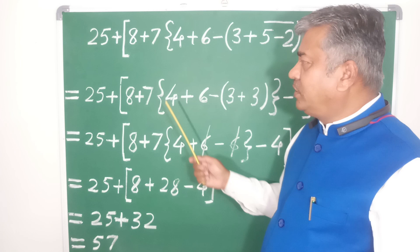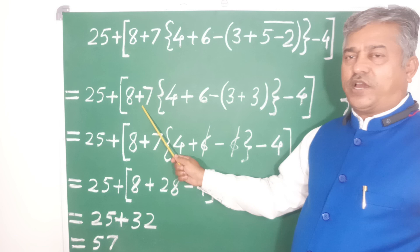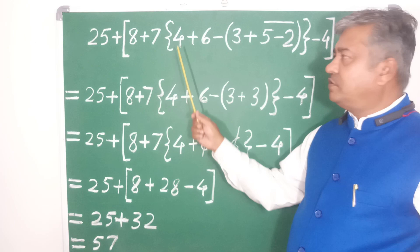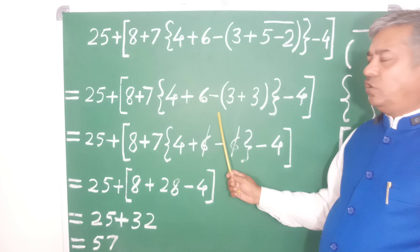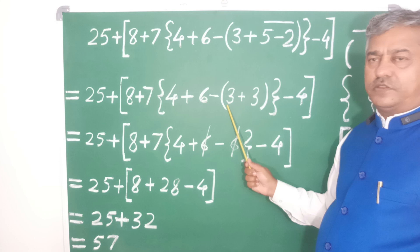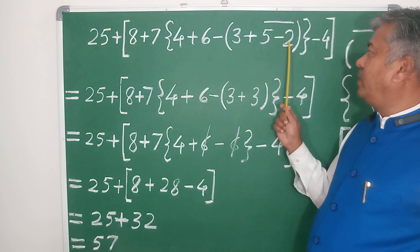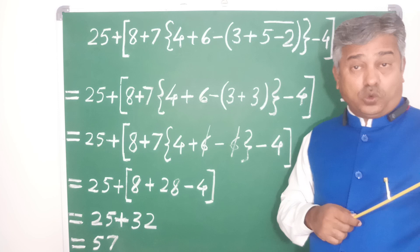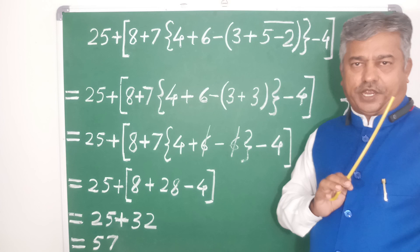Write down all the things as they are. This equals 25 plus square bracket, 8 plus 7 — wait, that should be 8 plus 1. Inside the curly bracket: 4 plus 6, and minus as it is, then the small bracket contains 3 as it is. Now we do the basic operation on the bar bracket: plus 5 and minus 2. After subtracting 2 from 5, we get 3. So the bar bracket is now opened.